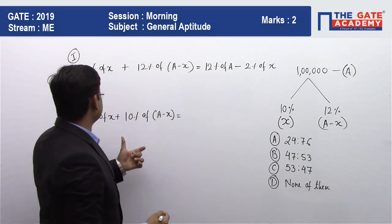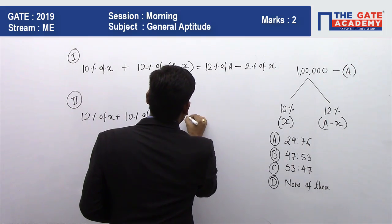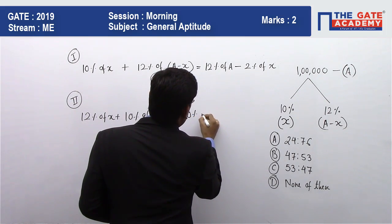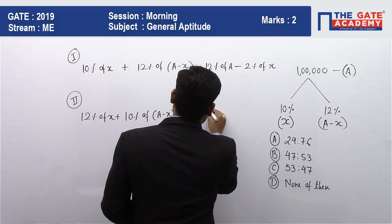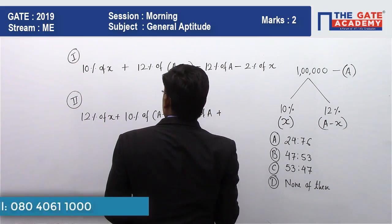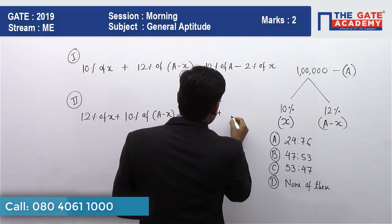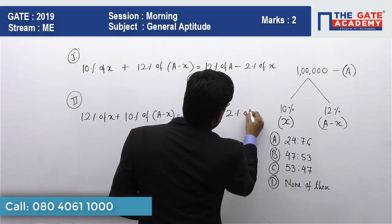If I will simplify this, I will get 10% of A plus 2% of X.